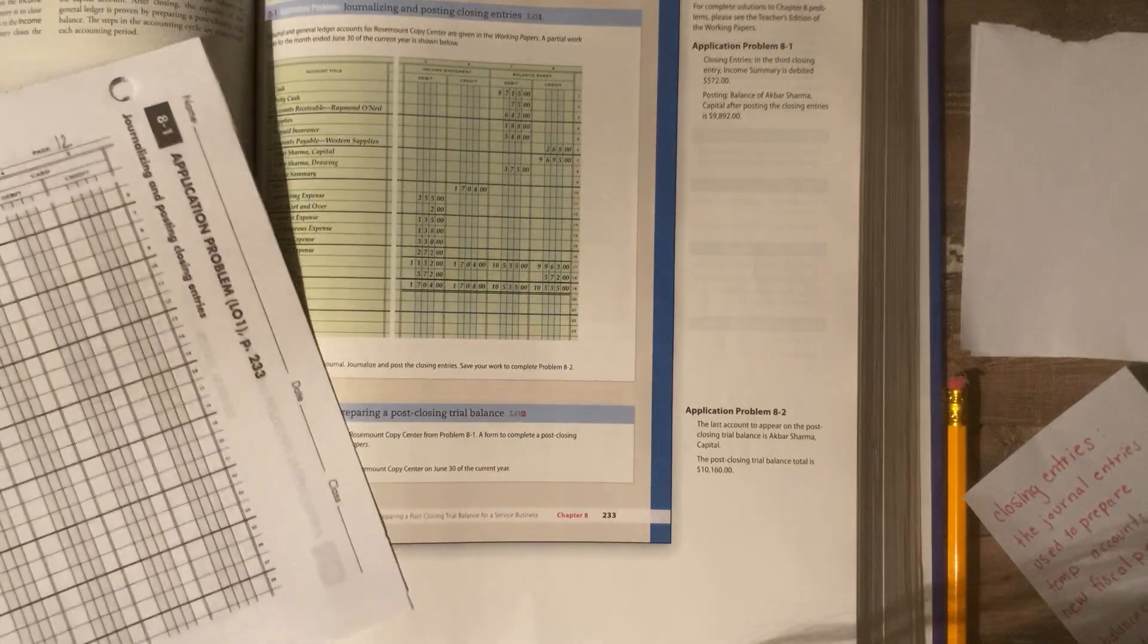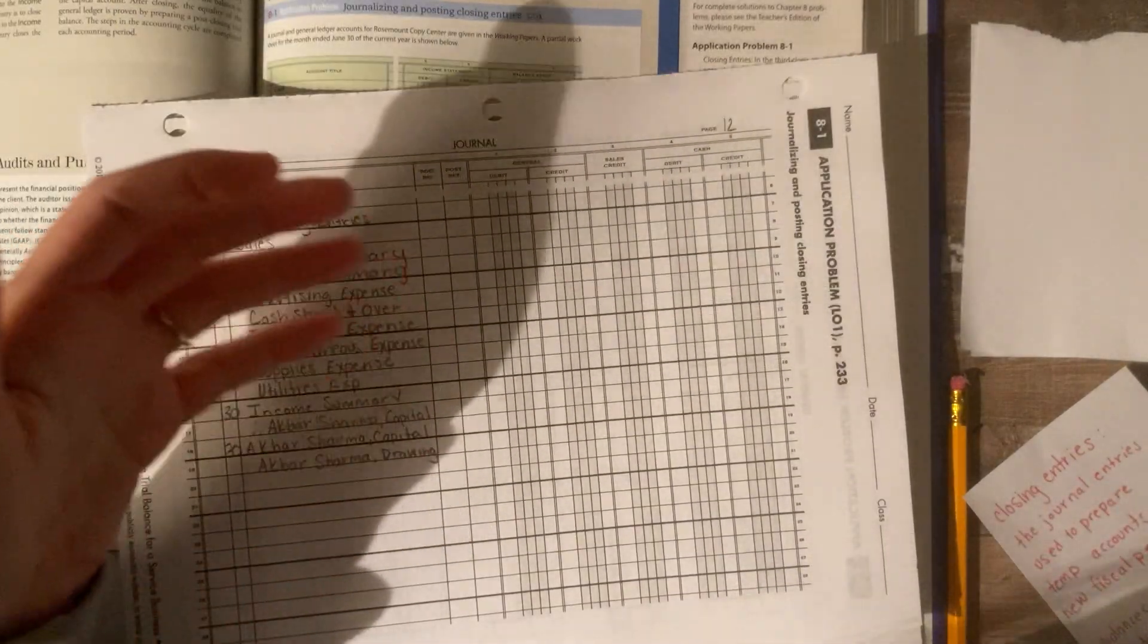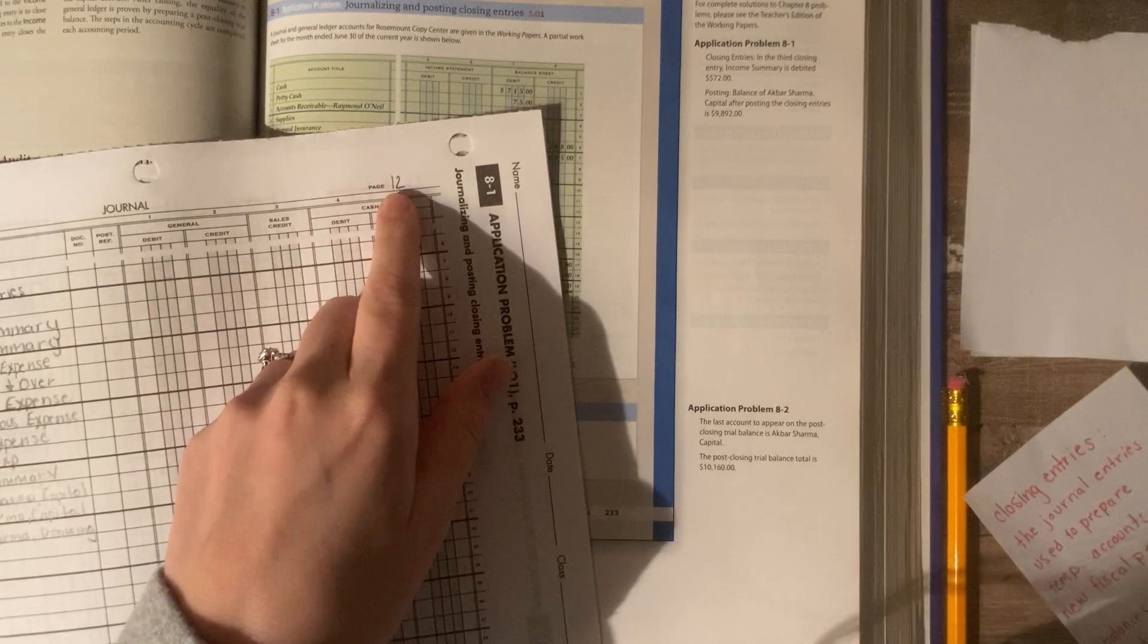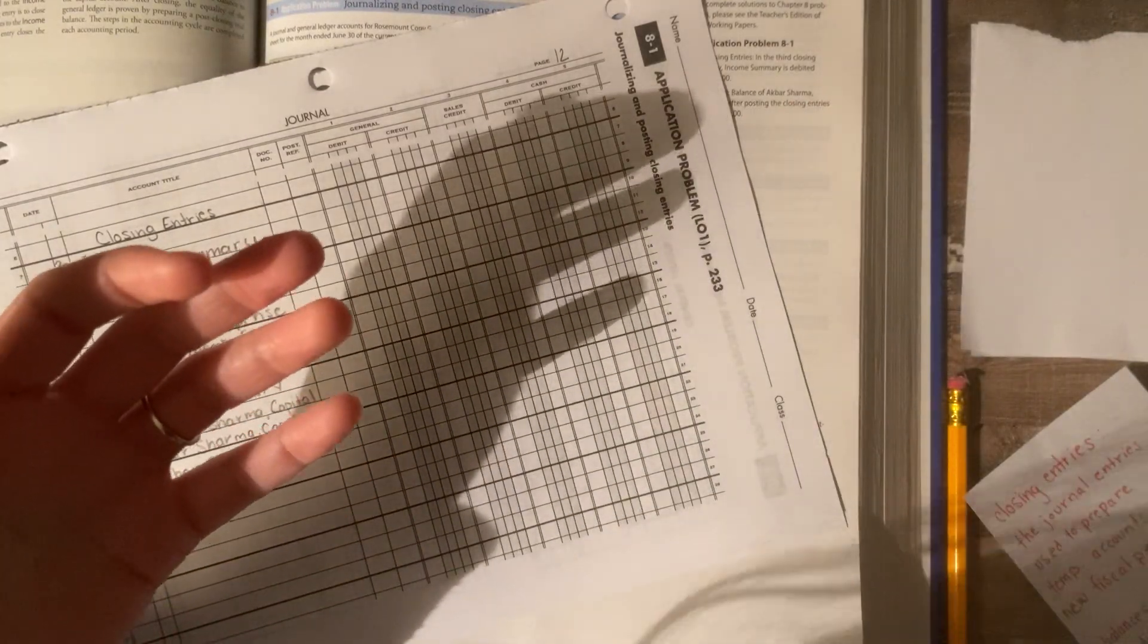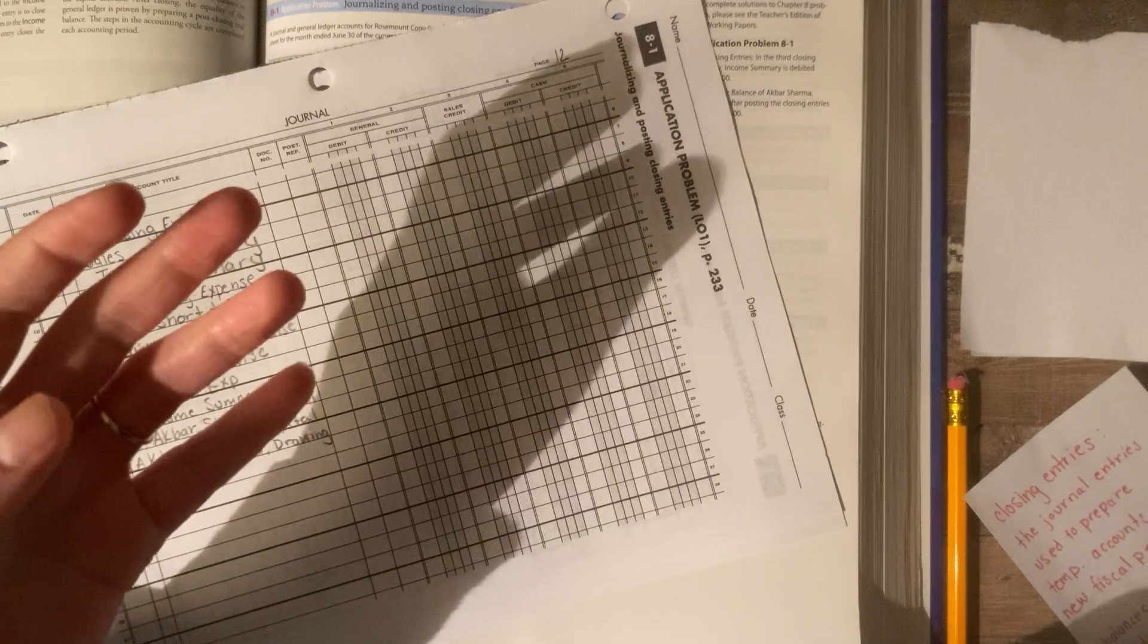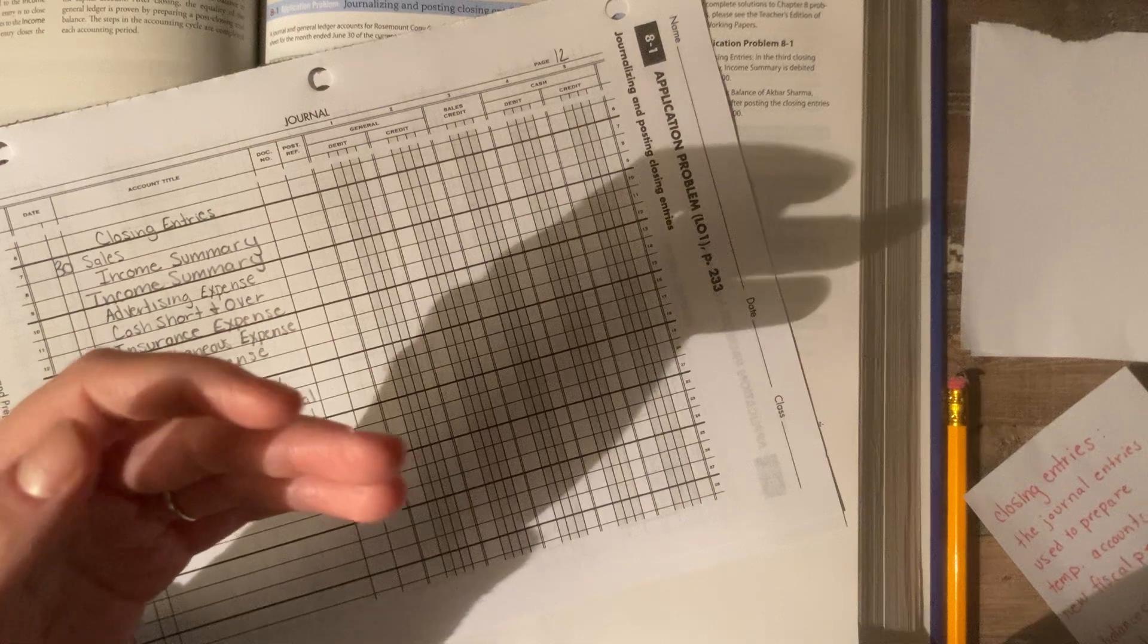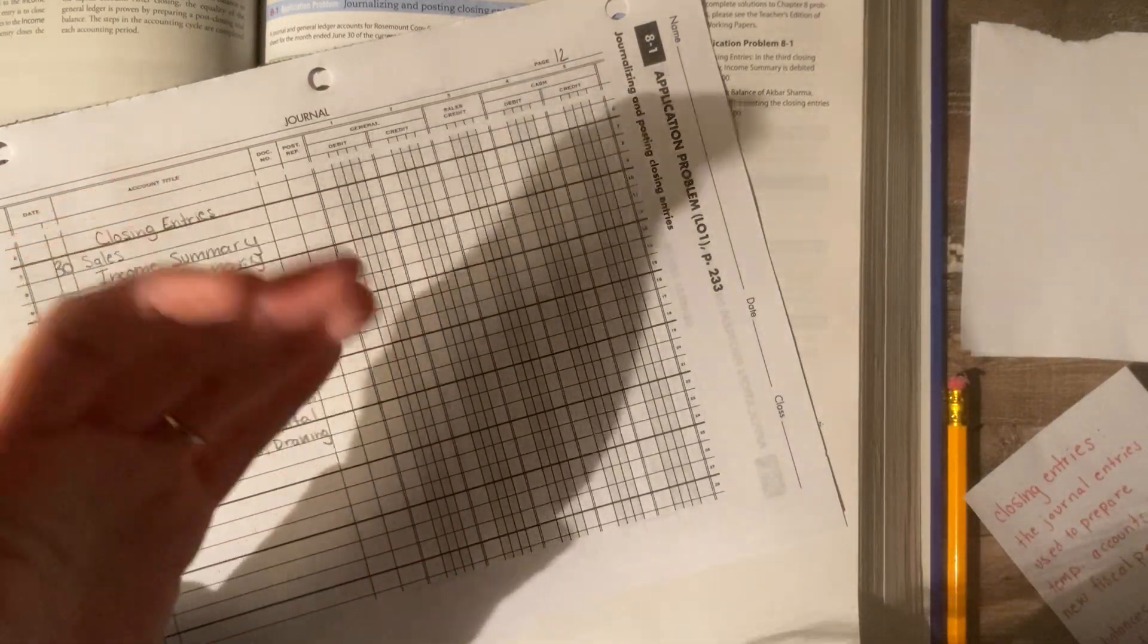So I'm going to get out my matching workbook papers, and the first thing I need to do is journalize any of the closing entries. The instructions say, continue on page 12 of the journal. We know it's page 12. Journalize and post the closing entries. So this is just that next step in the accounting process. The first thing we did was journalize. The second thing we did was post to the general ledger. Then we created a worksheet, and from the worksheet, we made income statement and balance sheets.